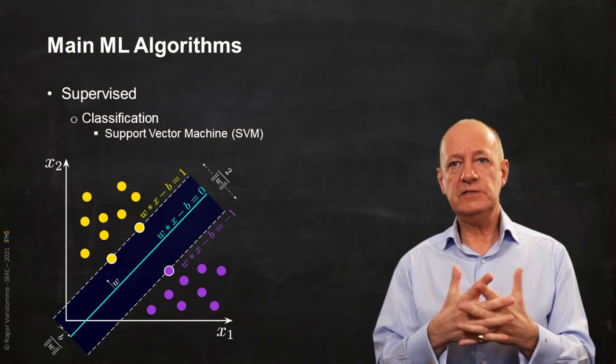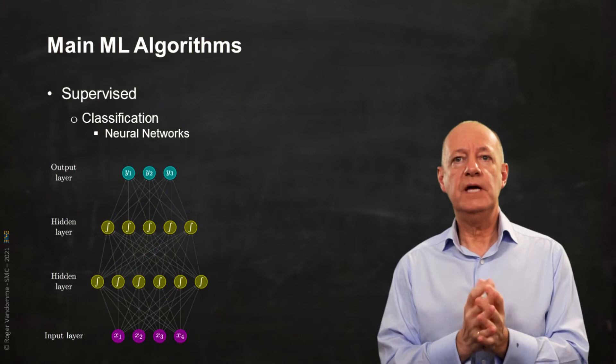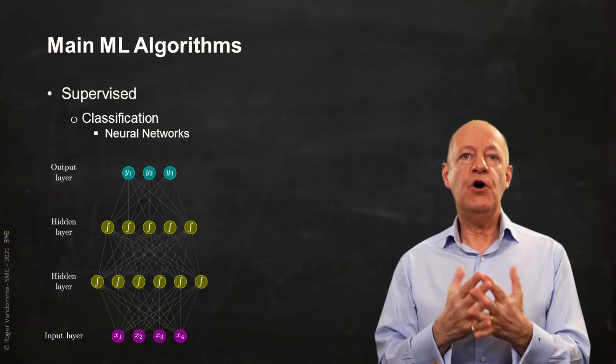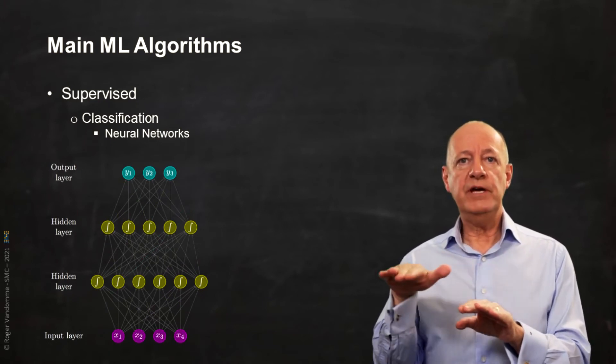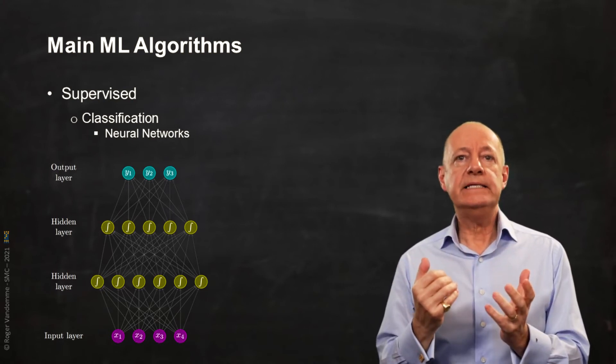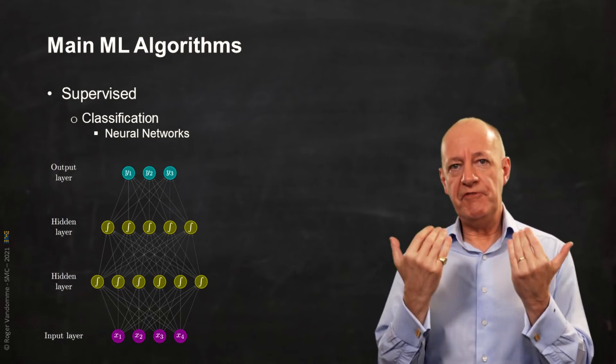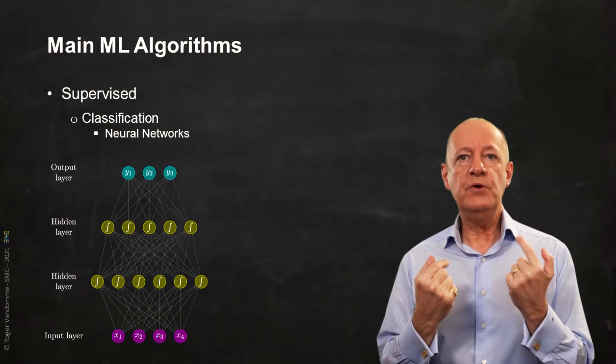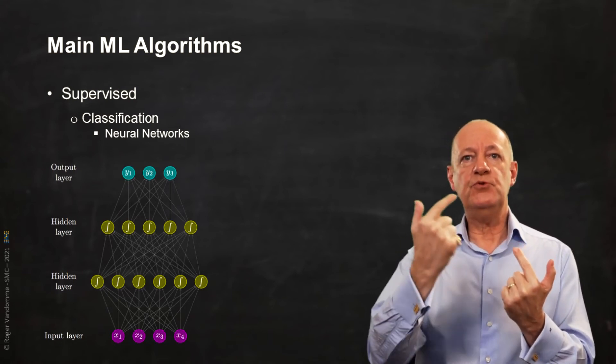Even more complex are neural networks. These are composed of neurons arranged in layers. The idea is to reproduce the functioning of the human brain with the transmission of a signal from neuron to neuron.